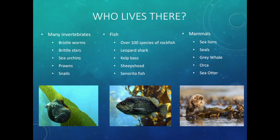There are a lot of organisms living in kelp forests. Invertebrates — animals without a backbone — include bristle worms, brittle stars, sea urchins, prawns, and snails, as well as sea stars. Fish species include over 100 species of rockfish, leopard sharks, kelp bass, sheepsheads, and even a fish called the señorita fish. Mammals found in kelp forests include sea lions, seals, gray whales, orcas, and sea otters.